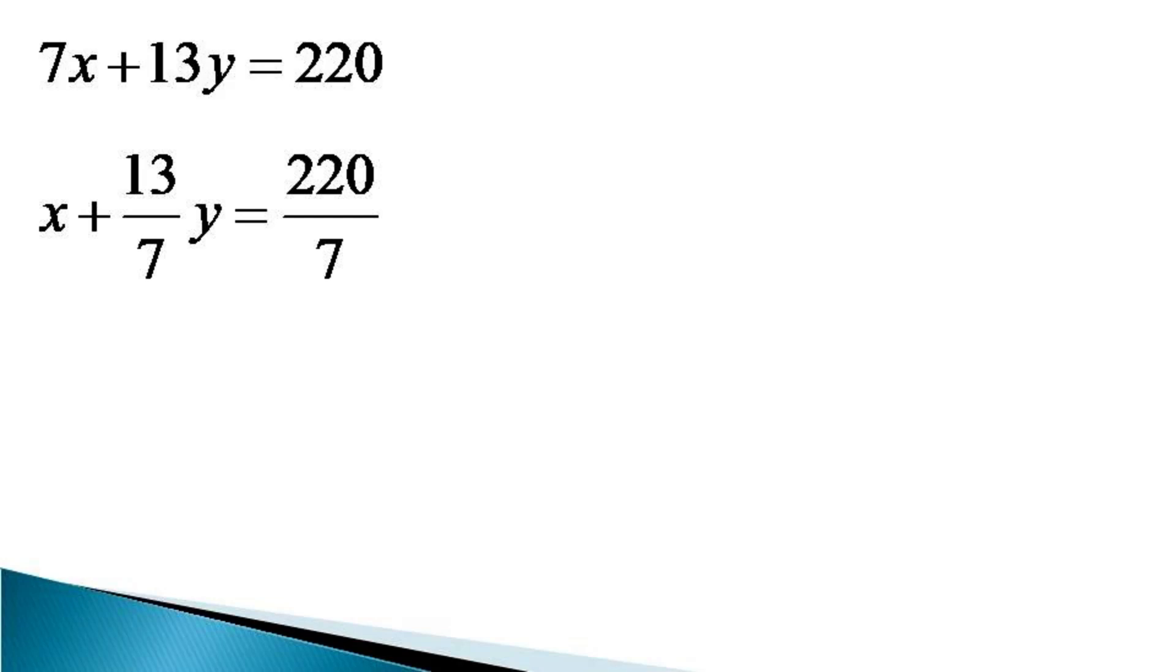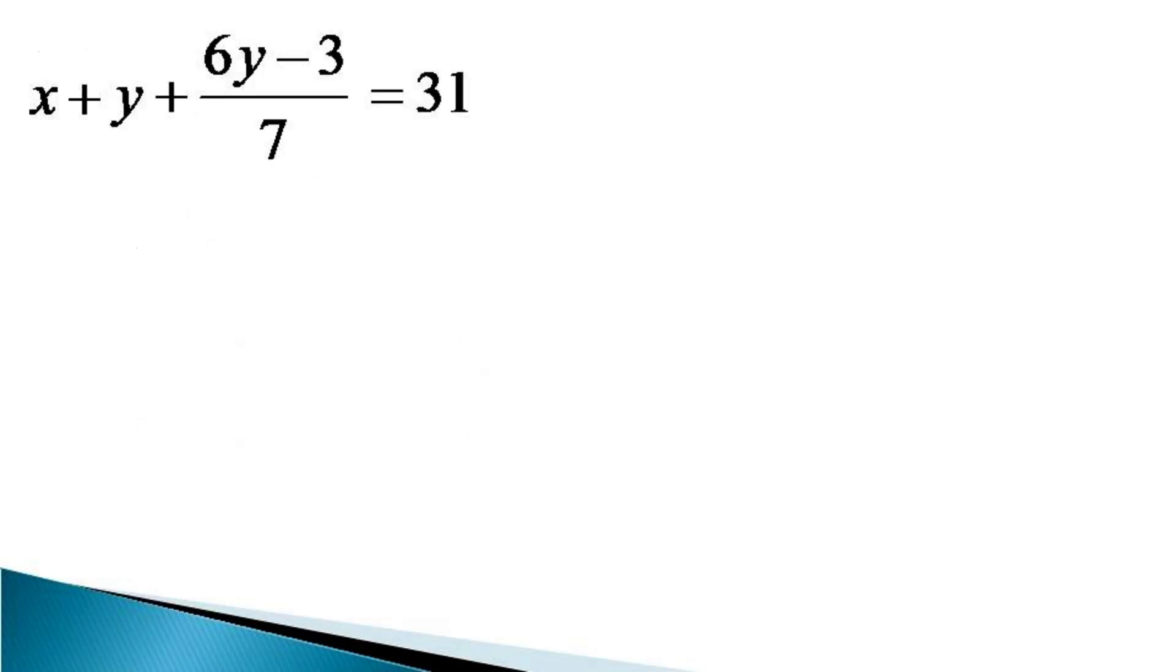This equation can be written as x + y + 6/7 y = 31 + 3/7. We have separated the whole parts from the fractional parts. This can be further written as x + y + (6y - 3)/7 = 31 by bringing all the fractional parts together. This equation can hold good for integer values of x and y only when (6y - 3)/7 is also an integer. Here we are writing (6y - 3)/7 = an integer.